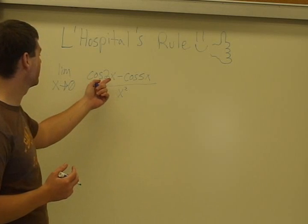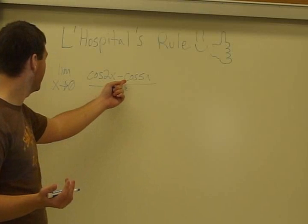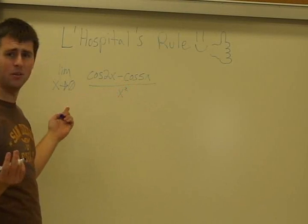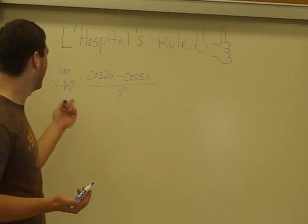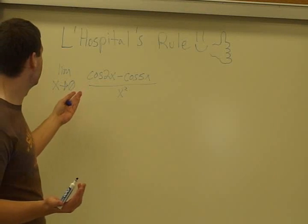And as cosine 2x, if that equals 0, cosine of 0 is 0. So minus 0 over 0, that's 0 over 0. I need L'Hospital's help for this. So L'Hospital's rule is what I'm going to use.